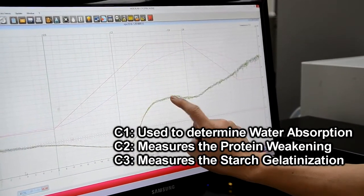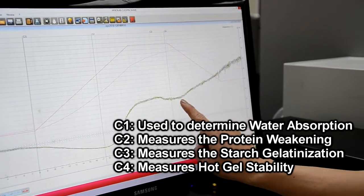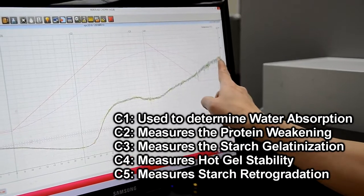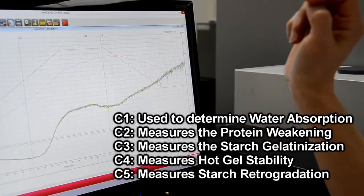C3, which measures the starch gelatinization. C4, which measures the hot gel stability. And C5, which measures the starch retrogradation in the cooling process.